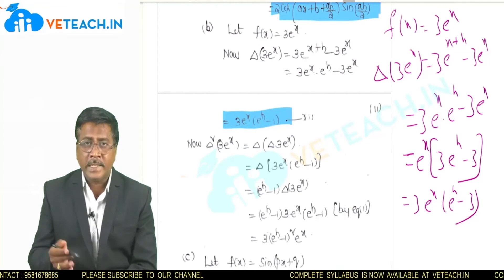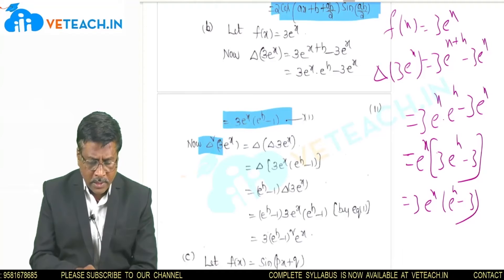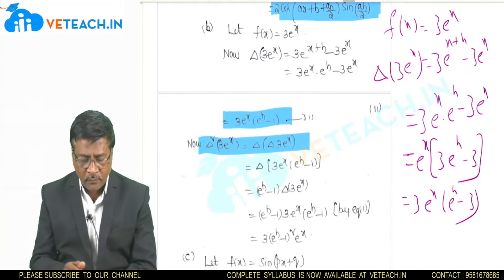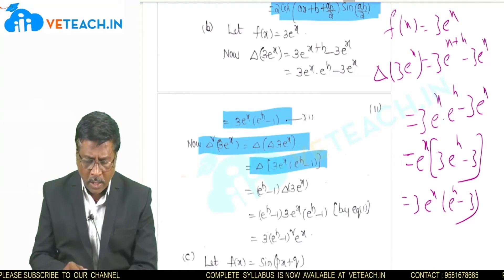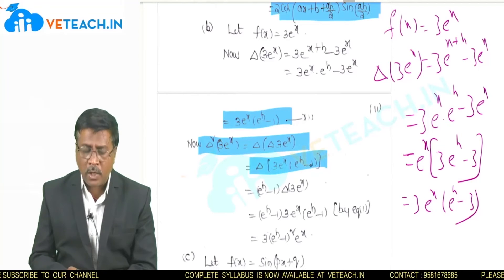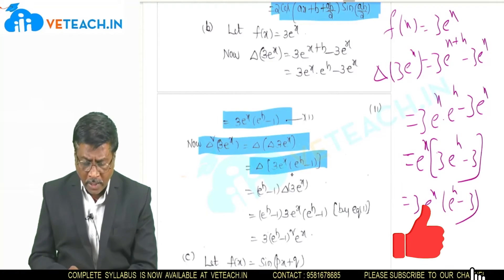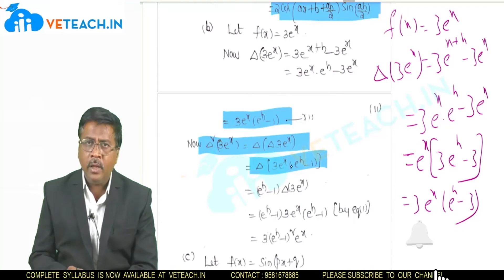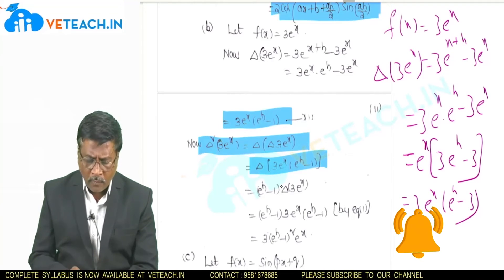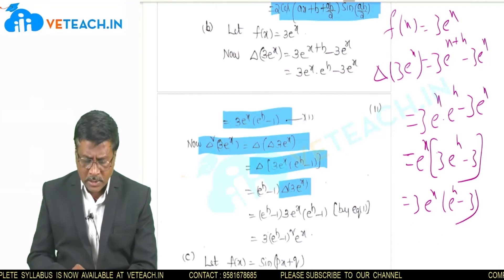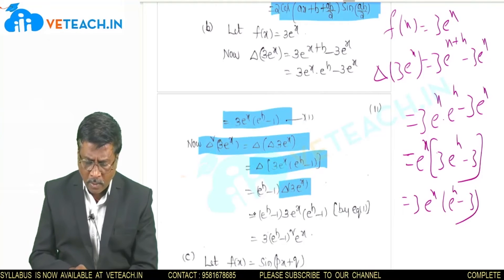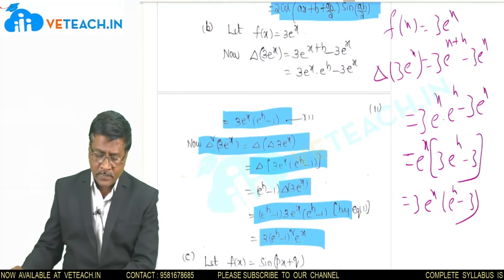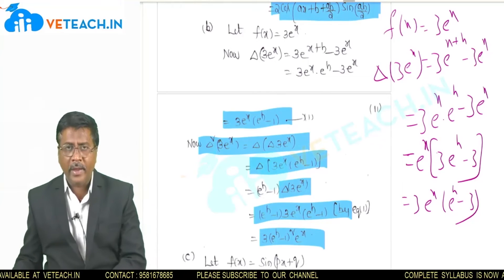Now for the second forward difference, delta squared of 3·eˣ = delta[delta(3·eˣ)] = delta[3·eˣ·(eʰ−1)]. Since (eʰ−1) is a constant, it comes out front, and applying delta again gives 3·(eʰ−1)²·eˣ.